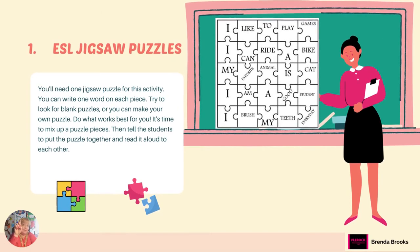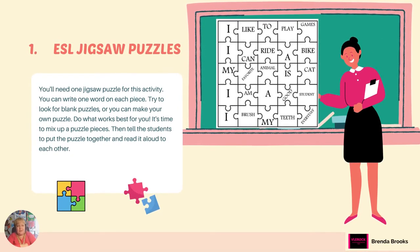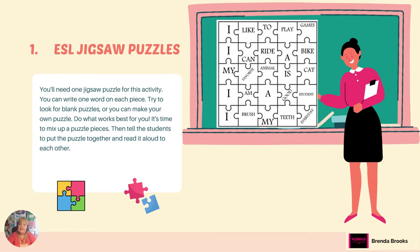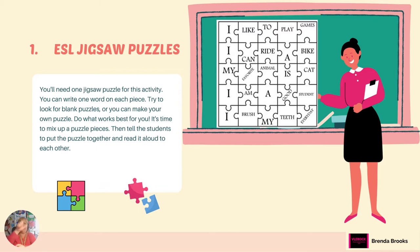Number one: ESL jigsaw puzzles. What you'll need is a jigsaw puzzle for this activity. You can either buy one that's blank or turn one over and write sentences for each piece. As you can see from the example at the top, we can look at 'I like to play games.' Once the puzzle pieces are separated, students put them back together and read what the puzzle says.